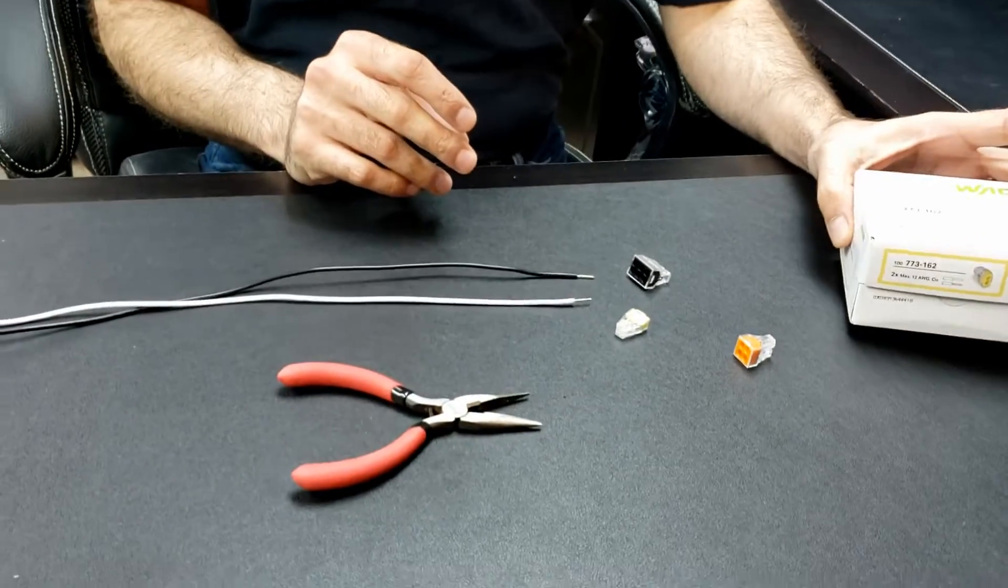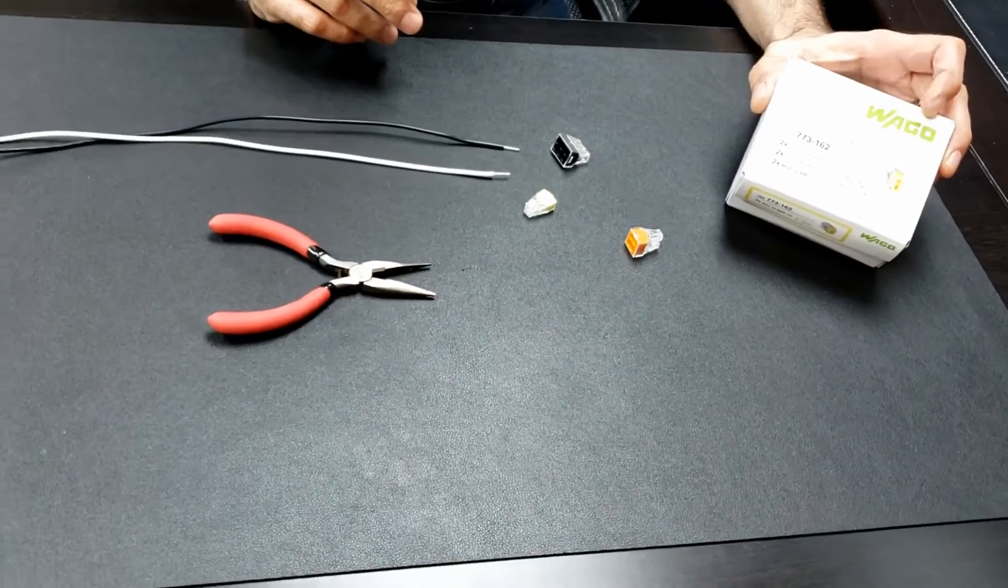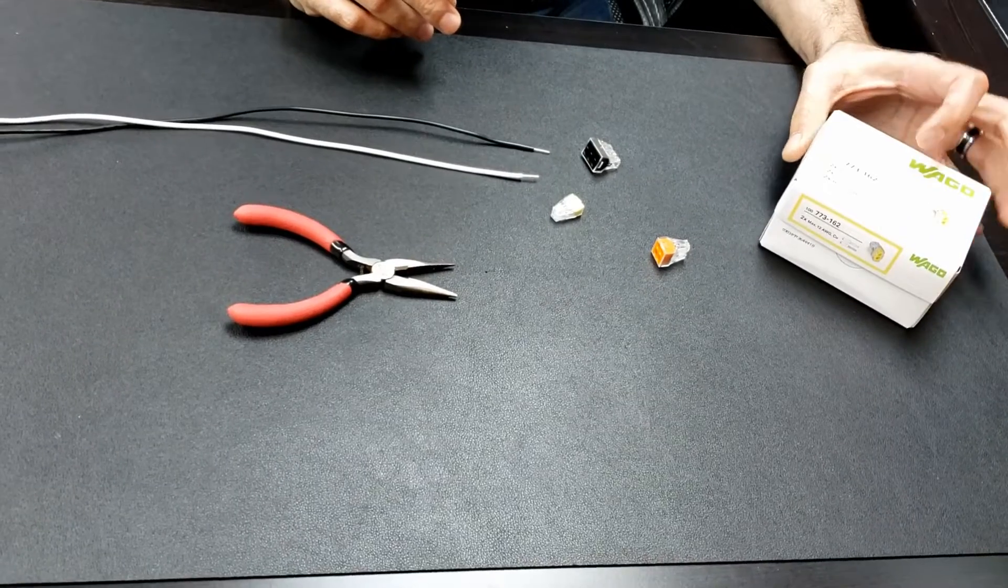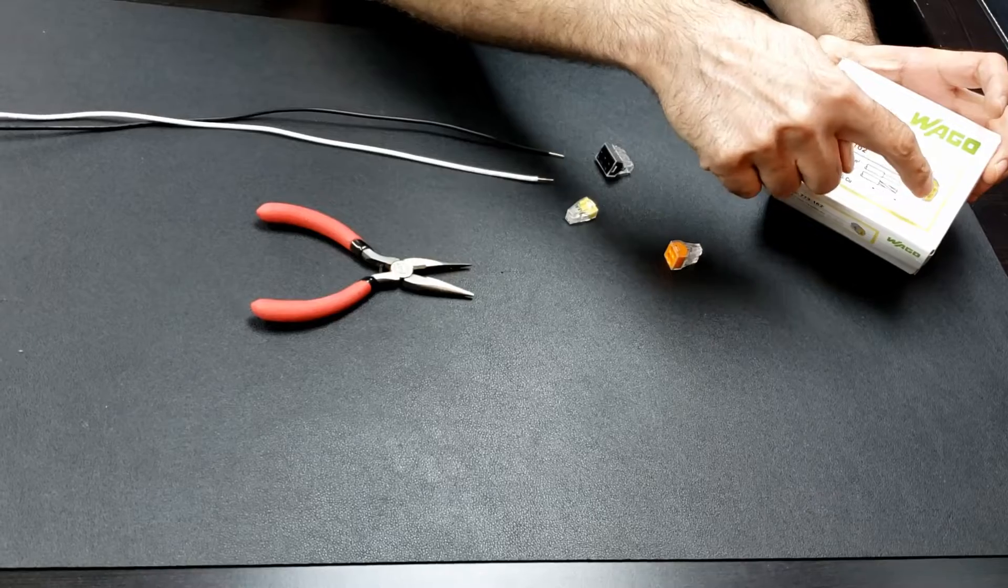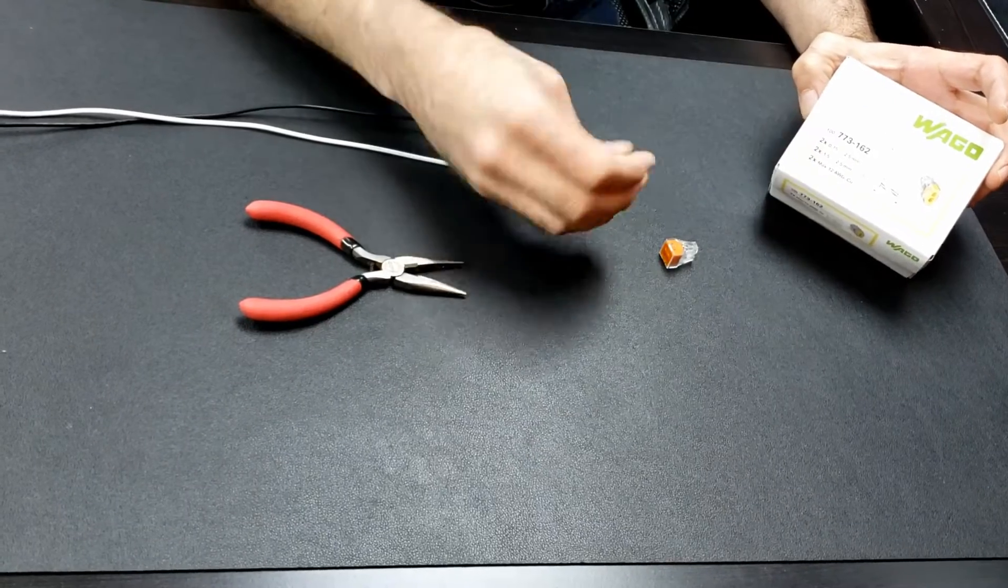Hi, I'm Russ with ESBService.com. In this video I'm going to show you how easy it is to make and break wire connections in terminal blocks. In this example, these are WAGO style terminal blocks, and they also call them wall nuts.